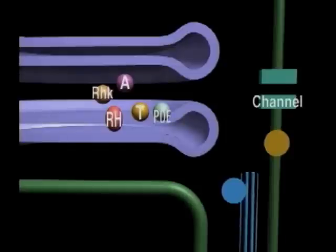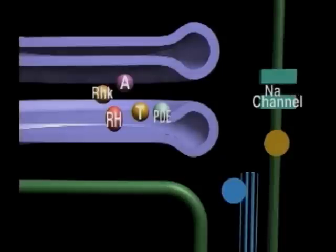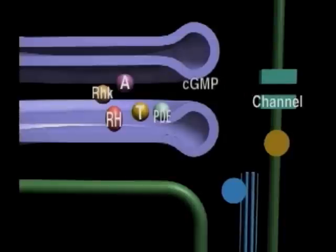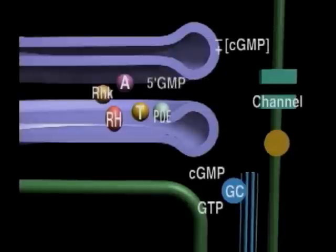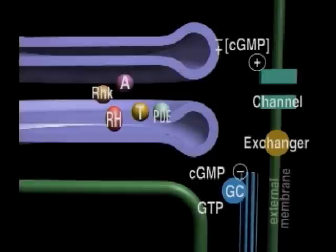Now there's a lot of cyclic GMP in the cell, and some interacts with another protein called an ion channel. The ion channel allows sodium ions from the outside into the inside of the cell. When the phosphodiesterase starts to cleave the cyclic GMP, it lowers the concentration of it, and that causes the cyclic GMP on the ion channel to fall off. When that happens, the ion channel closes down. The concentration of sodium in the cell changes, which changes the voltage across the membrane. That eventually causes a current to be sent down the optic nerve to the brain, and when interpreted by the brain, that is vision.